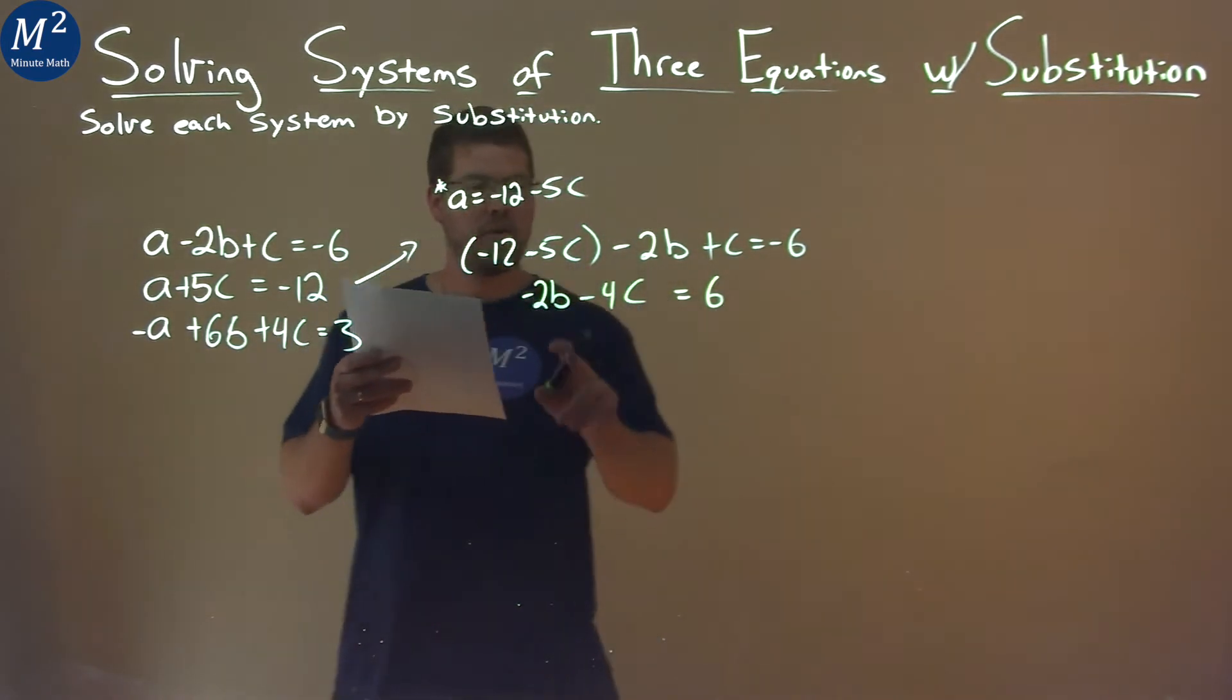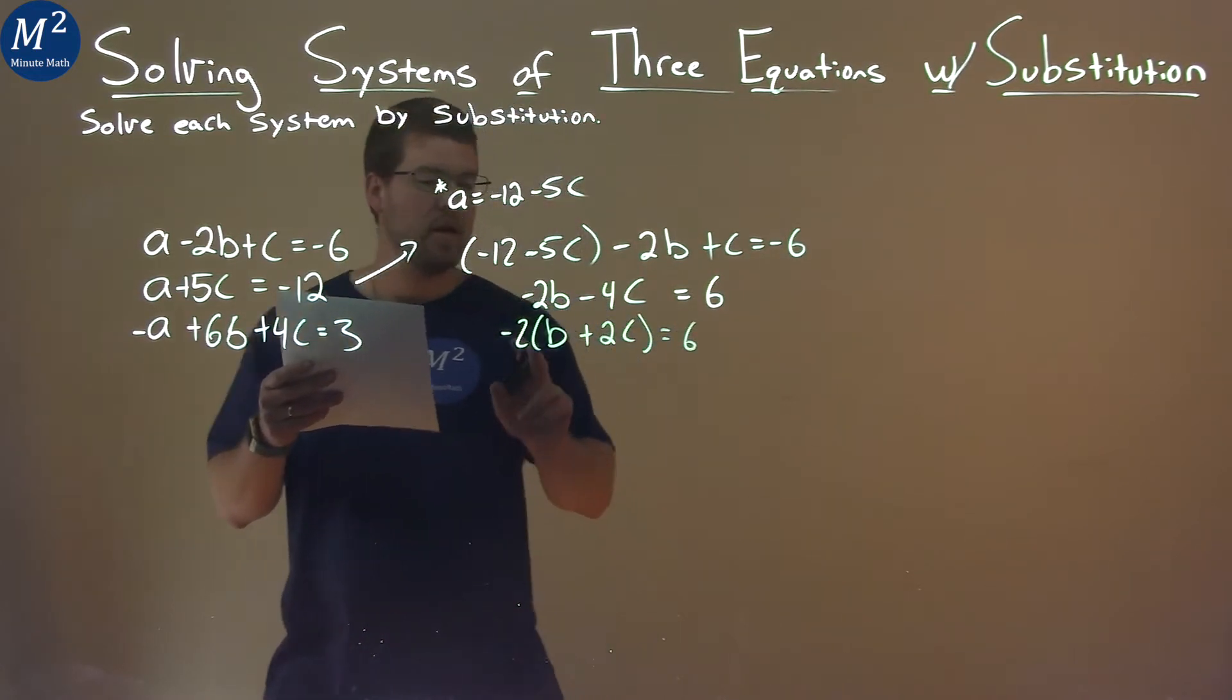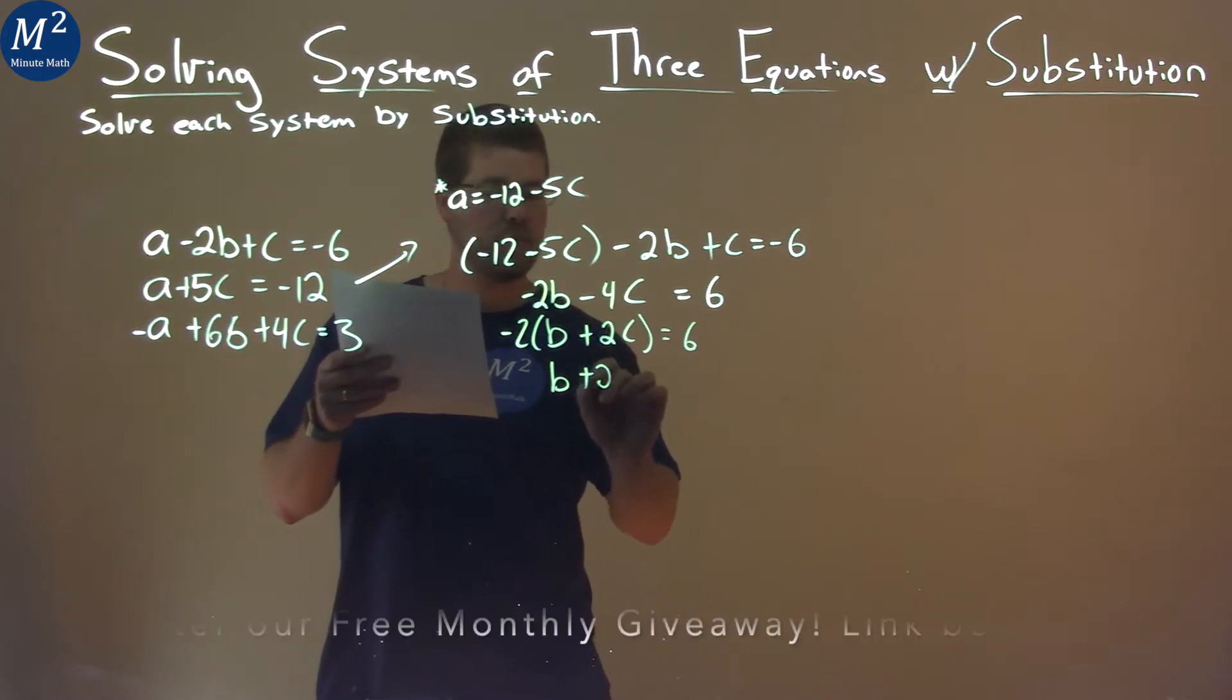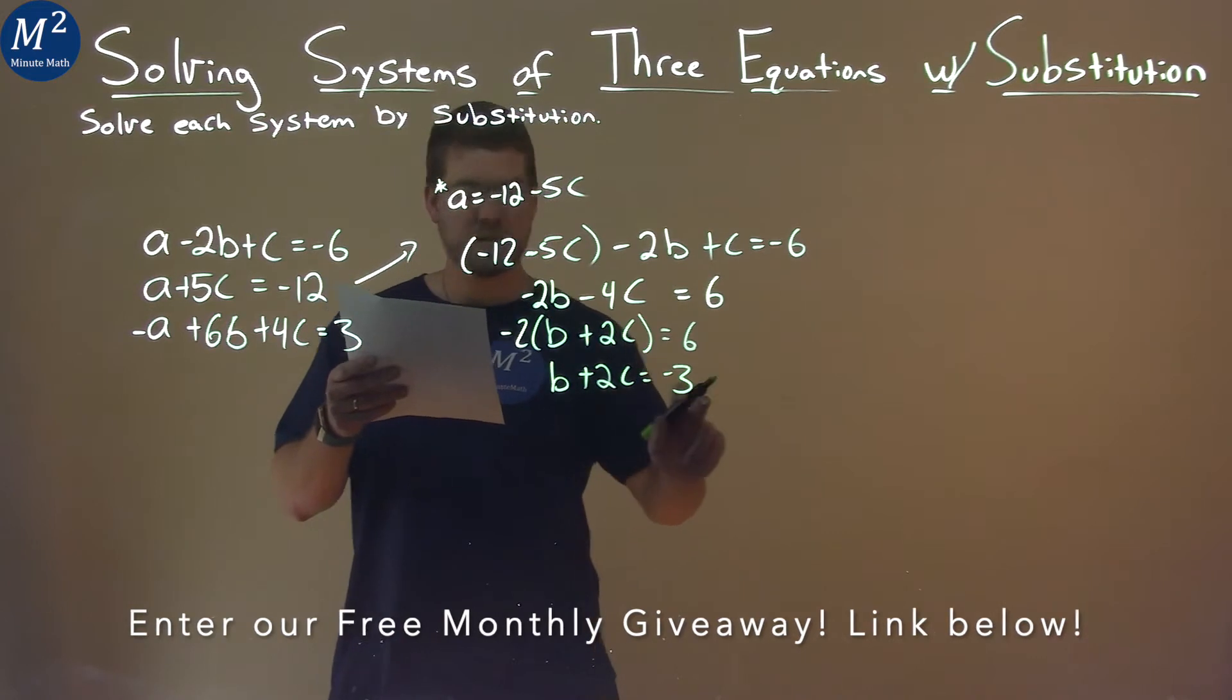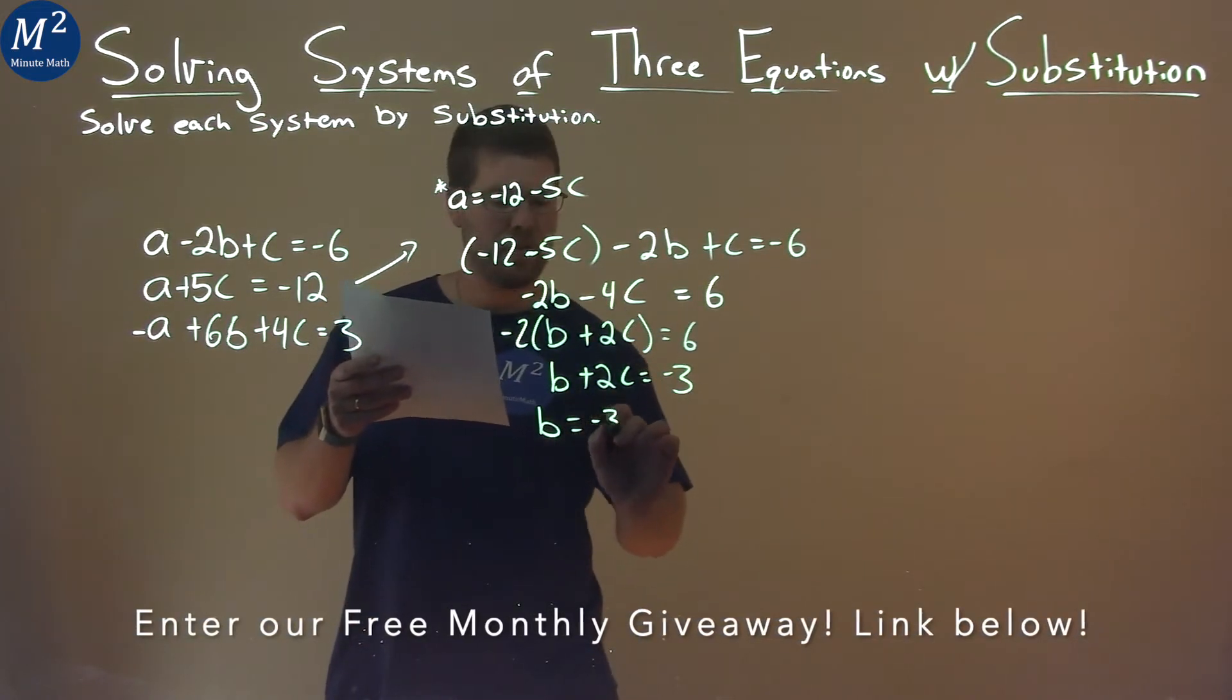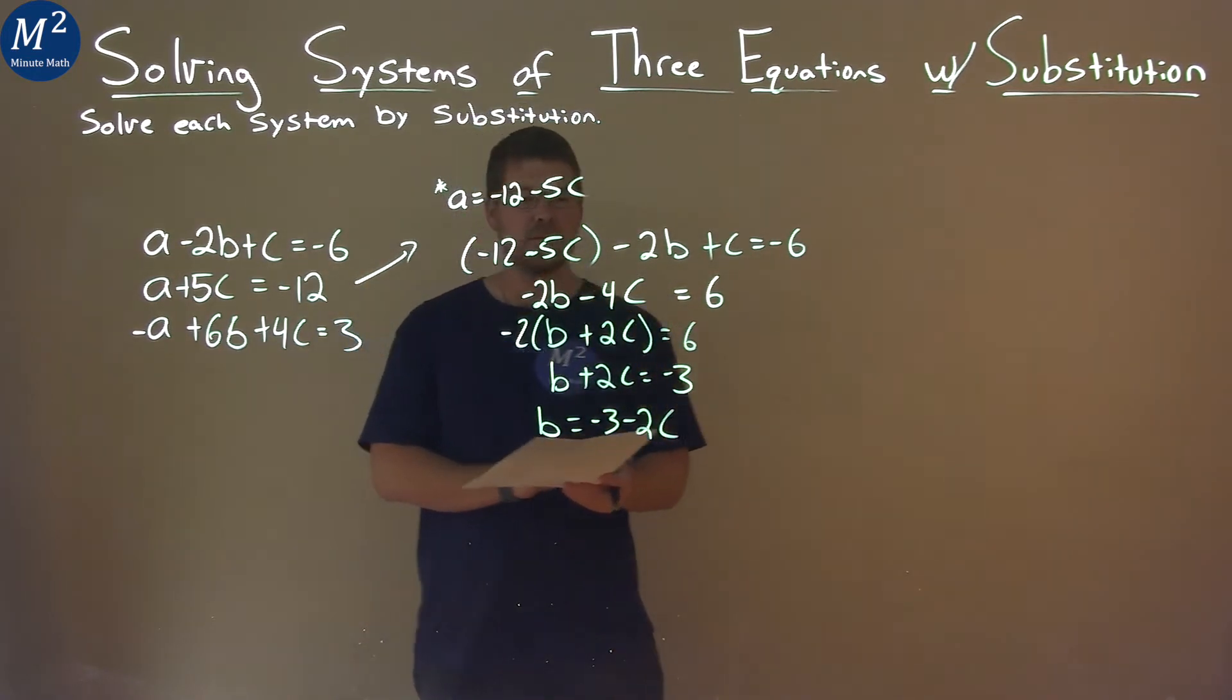And then from there, if I pull out a negative 2 from both parts here, negative 2, I'm left with B plus 2C. And that's equal to 6. Divide both sides by negative 2, and I have B plus 2C equals negative 3. So, subtract 2C from both sides, and B is equal to negative 3 minus 2C. So, now we have B in terms of C.